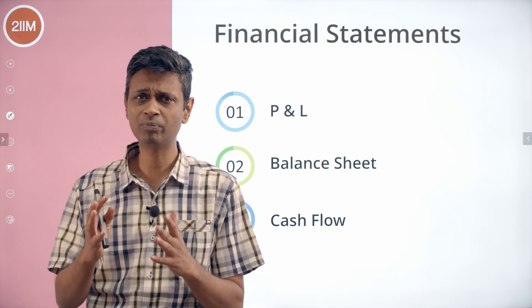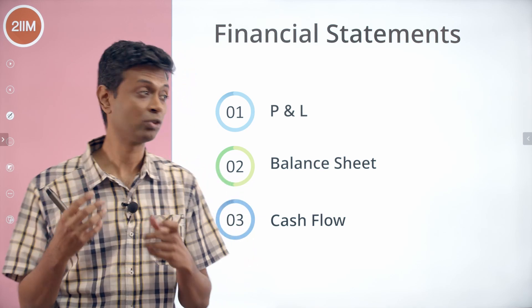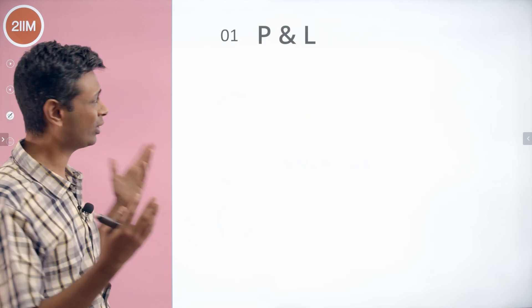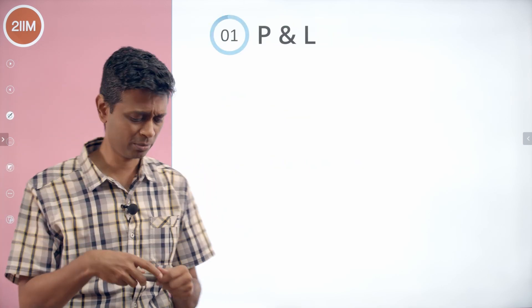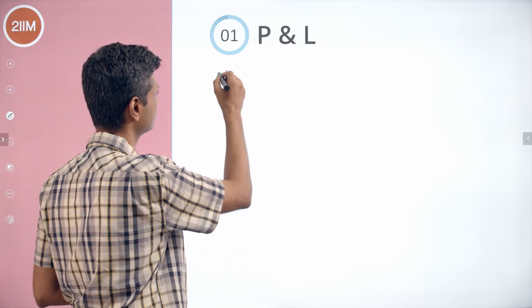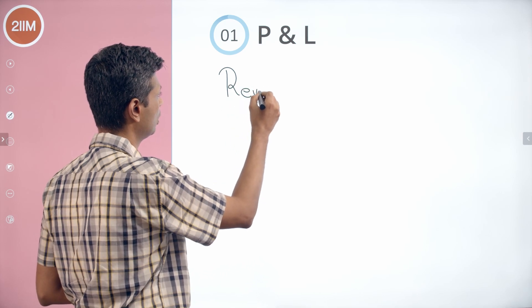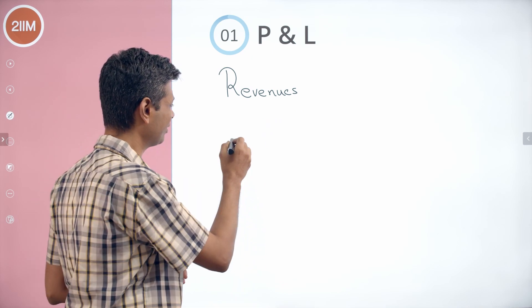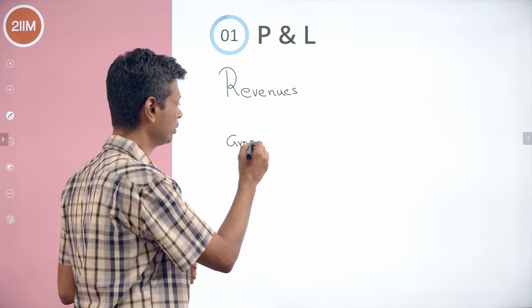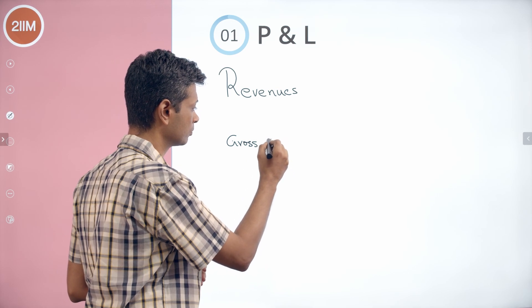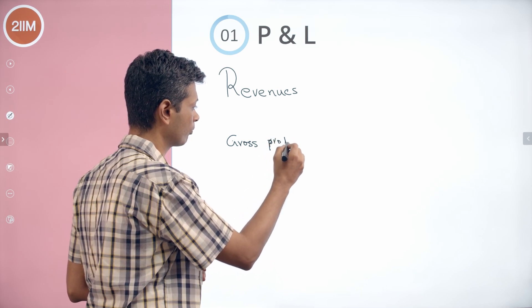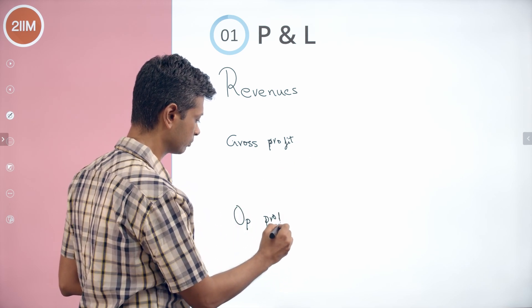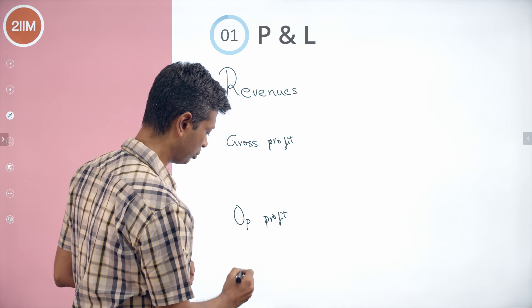I want to start with the most reasonable and the thing that we all get, which is the P&L or profit and loss statement. What is contained in a profit and loss statement? Revenues — how much revenue a company makes. After revenues, there are several things: one is called gross profit, then operating profit, then net profit.